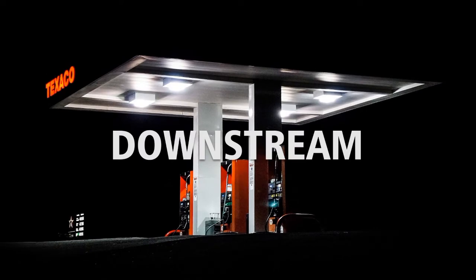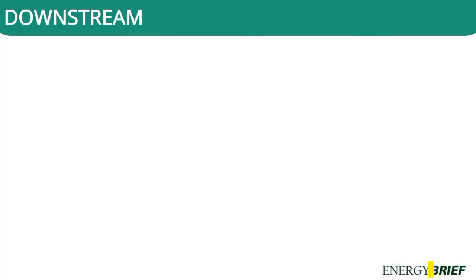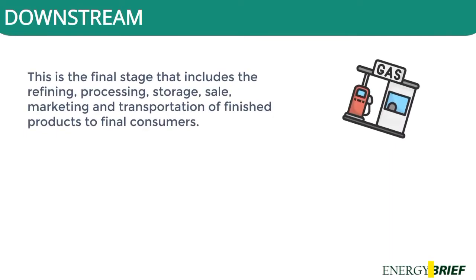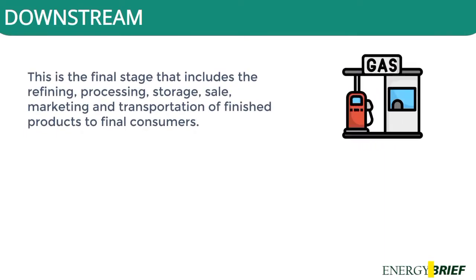The downstream sector is the final stage that includes the refining, processing, storage, sale, marketing, and transportation of refined oil and other finished products to final consumers.